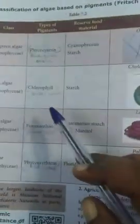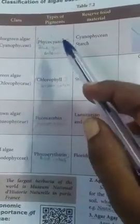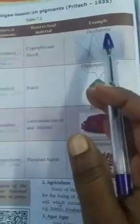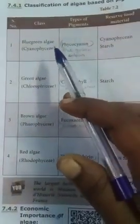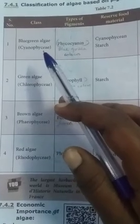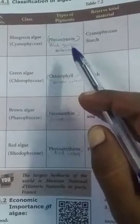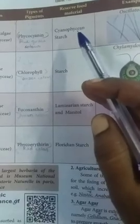The pigment colors are green, red, and blue. Cyanophyceae — this is one type of pigment. The pigment is phycocyanin, which is blue-green in color. The stored food material is cyanophycean starch. An example of blue-green algae is Oscillatoria.